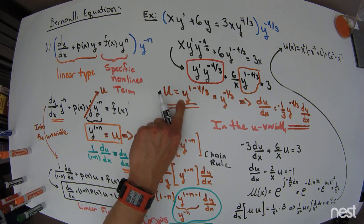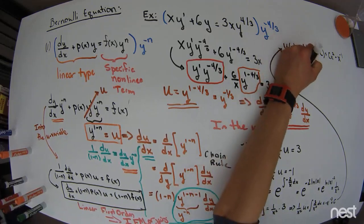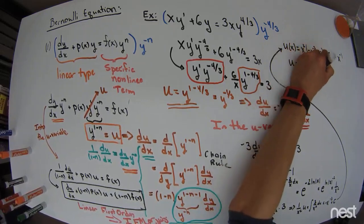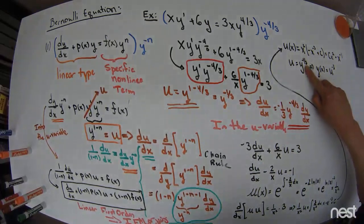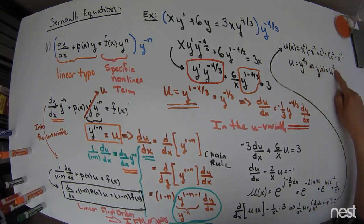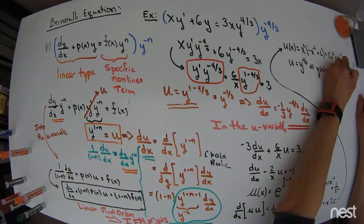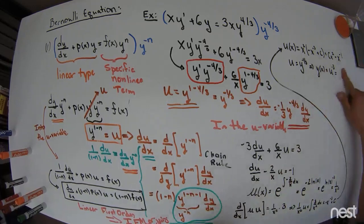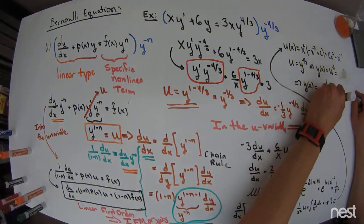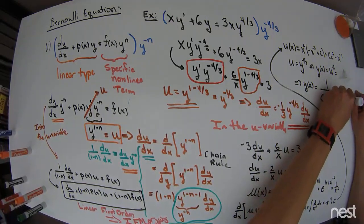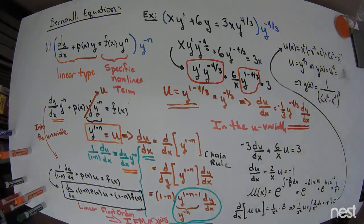How do I solve for y? If u equals y to the negative 1/3, then y(x) equals u to the negative 3. If I raise everything to the negative 3, the negatives cancel — exponentiating an exponent means they multiply, so I get negative 3 onto negative 1/3, giving me 1. So all of this means that y(x) equals 1 over the quantity (cx squared minus x to the negative 1), all cubed. That's the answer.